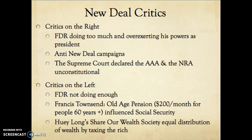There were critics of the New Deal on both sides. People on the right, who were very conservative, feared that Roosevelt was doing too much and overstepping his powers as president, so they launched an anti-New Deal campaign. The Supreme Court declared the AAA and NRA unconstitutional, arguing that those laws were established by the president rather than Congress — and the Constitution gives the power to make laws to Congress, not the president. Critics on the left, like Francis Townsend, felt Roosevelt wasn't doing enough. Townsend wanted an old-age pension of $200 per month for people 60 and over. Huey Long of Louisiana proposed his 'Share Our Wealth' program — taxing the rich so poor people could have more money.